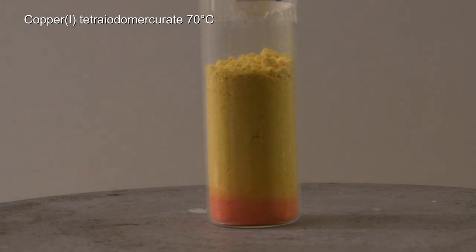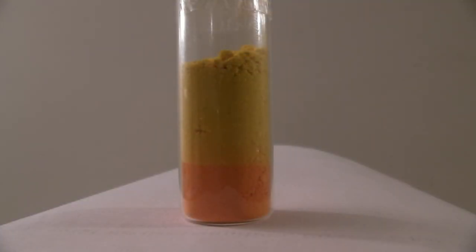But also mercury iodide changes its color from red to yellow at 127 degrees C. When it cools down it becomes yellow again due to the process being reversible. That's why thermochromic compounds can be used similarly to a thermometer.